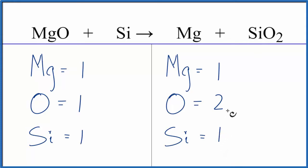Looks like we're going to start by balancing our oxygens by putting a coefficient of 2 in front of the MgO. This 2 applies to the whole compound here. So one times two gives us two oxygens. That balances our oxygen atoms.